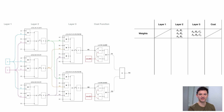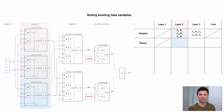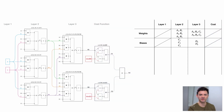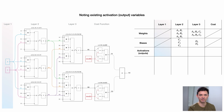Next we have biases. Layer 1 has no biases, just data points. In layer 2, we have bias c1 belonging to the first neuron, bias c2 belonging to the second neuron, and bias c3 belonging to the third neuron. In layer 3 we have biases d4 and d5. The cost function has no biases. We also have activations: in layer 1 we have x and y as data points. In layer 2 we have n1, n2, and n3 as outputs of the neurons. In layer 3 we have outputs o1 and o2.